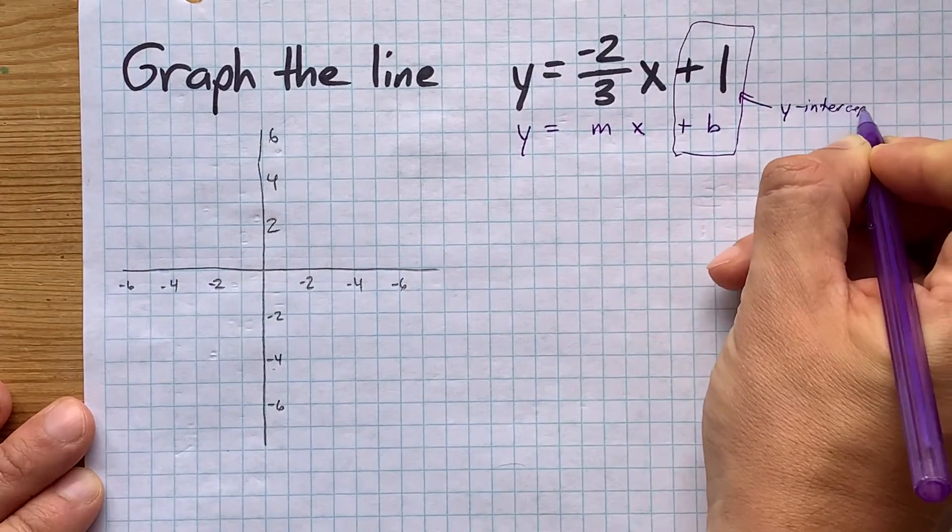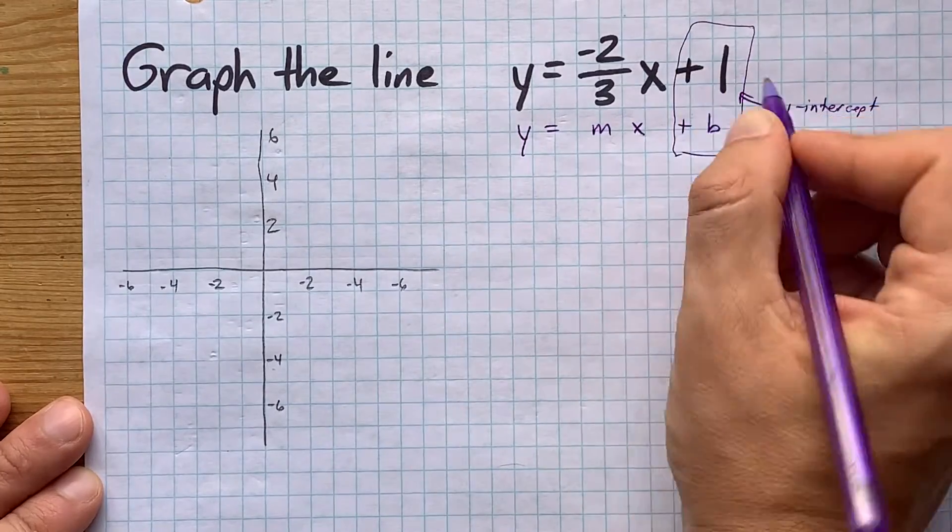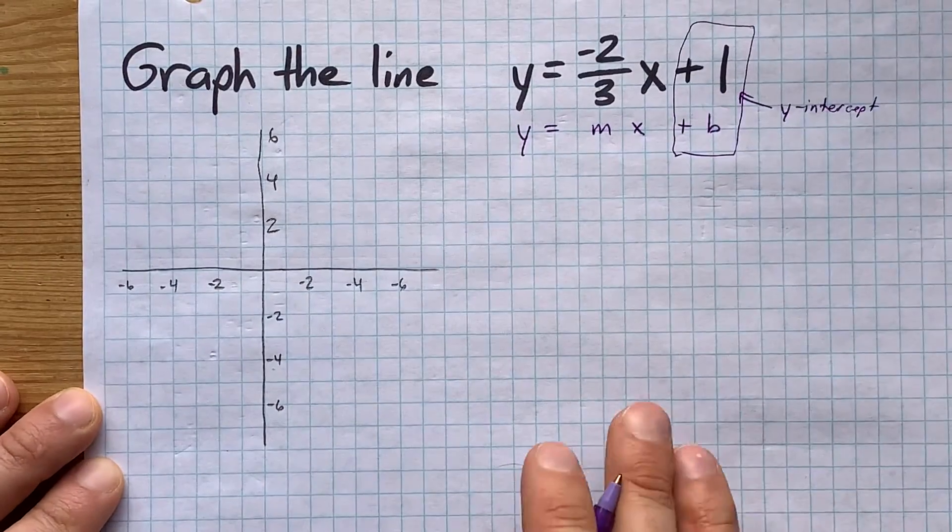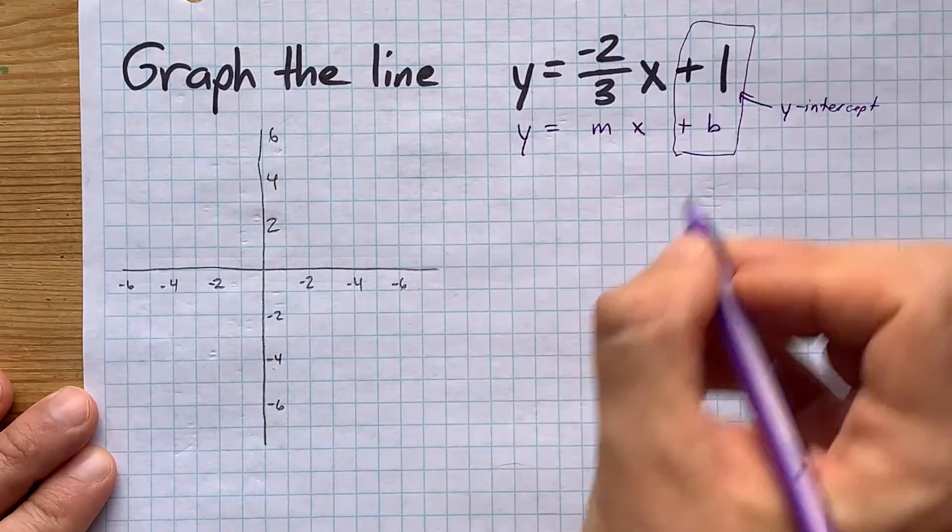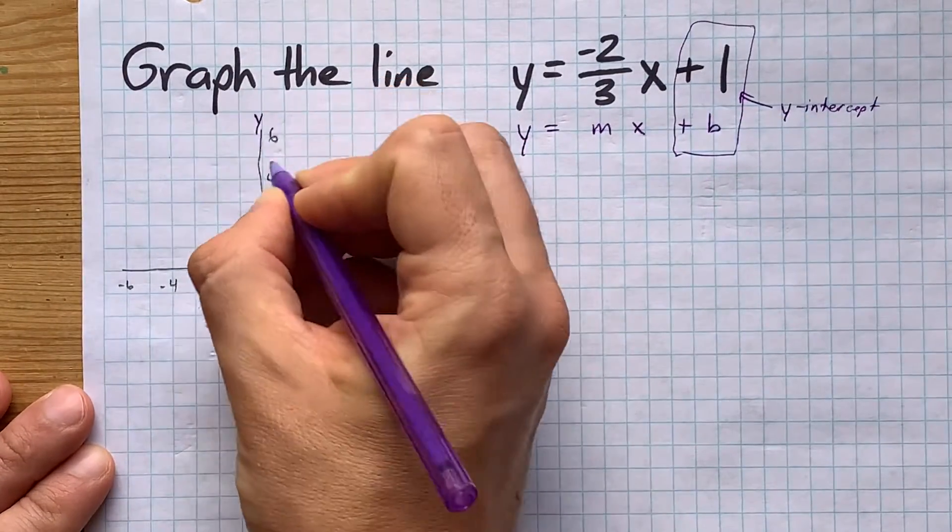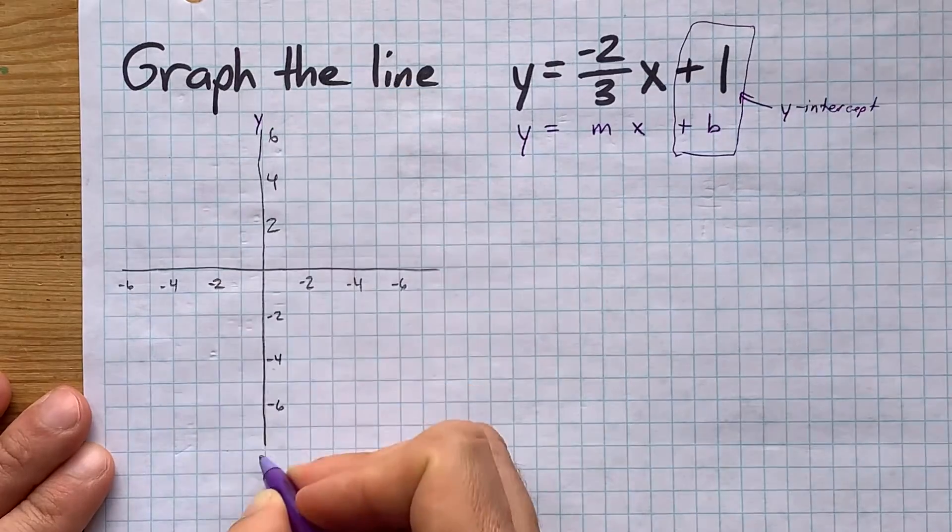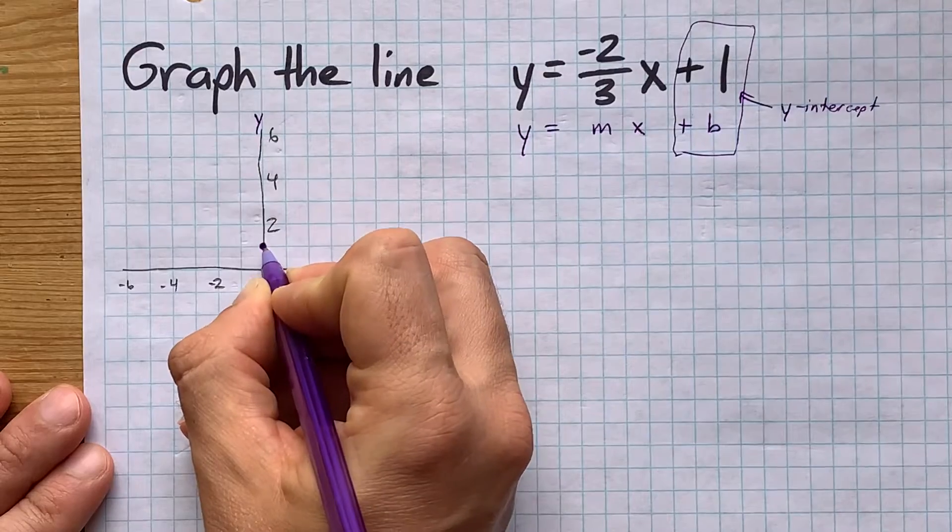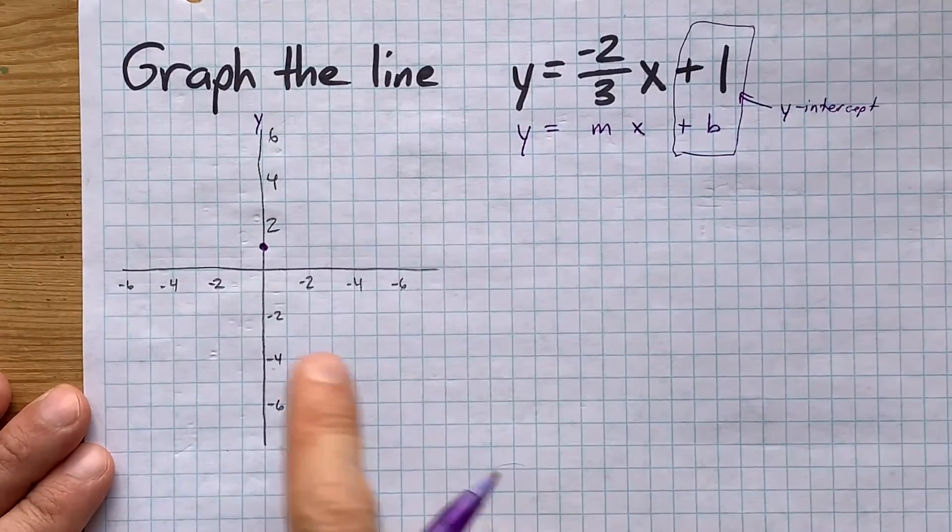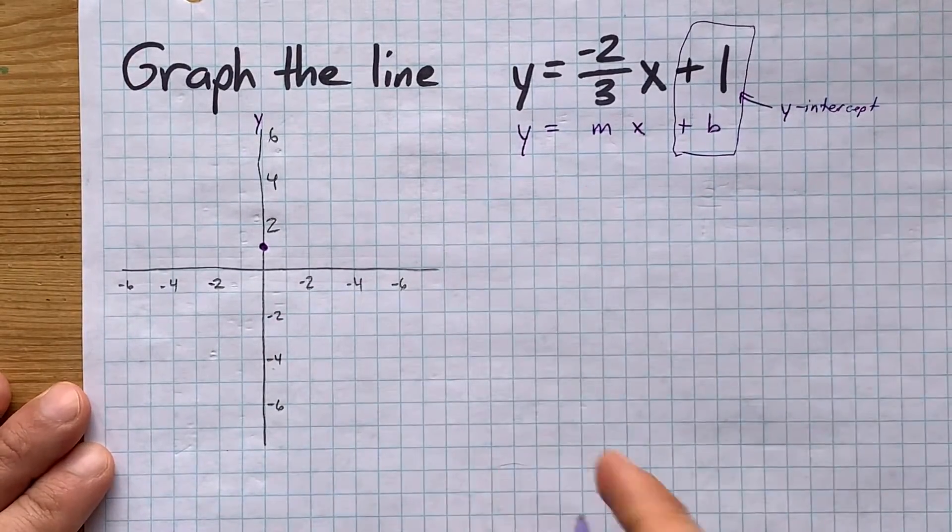The thing added or subtracted from the end is the b, or y-intercept, which means we're going to start this line from positive one. Now your y-axis is the up-down axis on your grid, so just find positive one, which is here between zero and two, and put a dot there. Great, that's the y-intercept, so far so good.